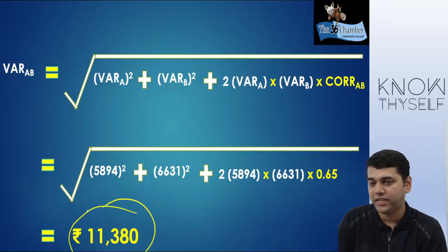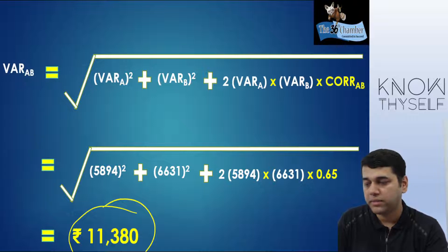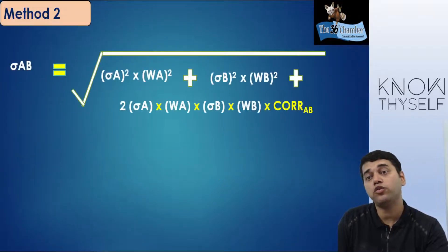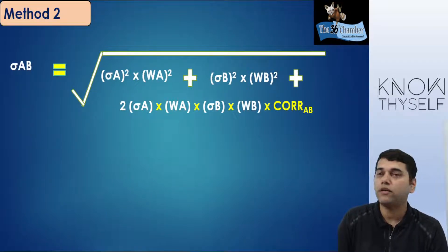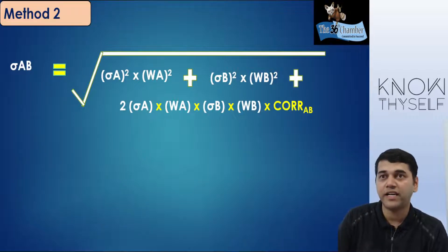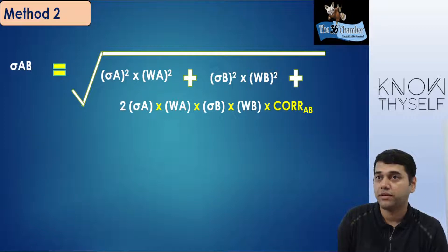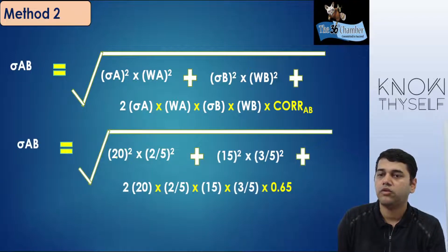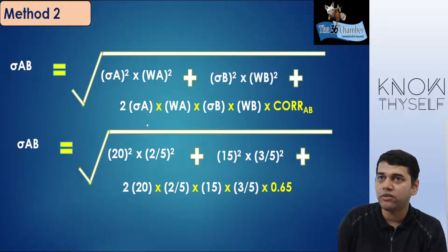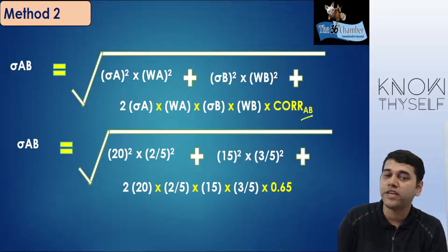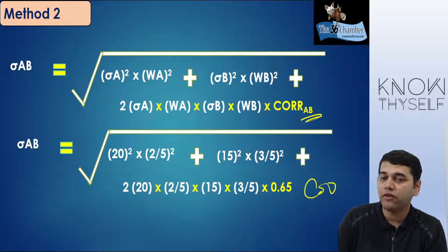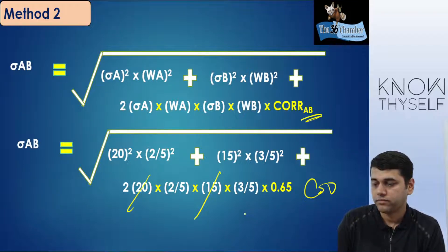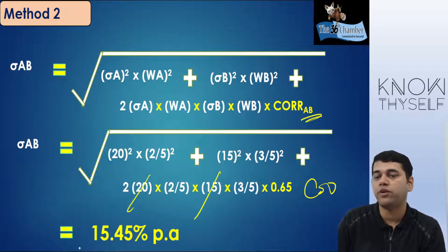In Method 1, we found 11,380. In Method 2, we should get the same. Method 2: find out the portfolio's standard deviation using the portfolio management formula, then find out one-day VAR for the portfolio. I will go for: σ_A² × (W_A)² + σ_B² × (W_B)² + 2 × σ_A × W_A × σ_B × W_B × 0.65. Weights are 2/5 and 3/5. Solving this gives 15.45% per annum as portfolio standard deviation.